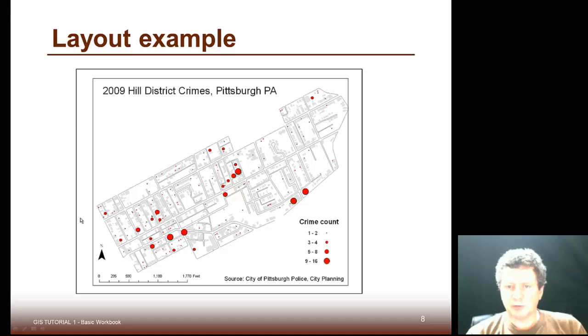Here's an example. You can see it's got the map elements. The map is relatively large with respect to the size of the paper. We have a legend over here that clearly identifies the information we're trying to convey. We have our source, we have a scale, we have a north arrow, and a title.